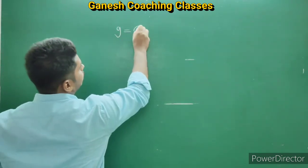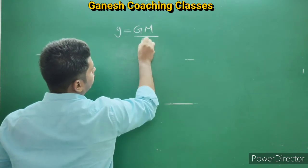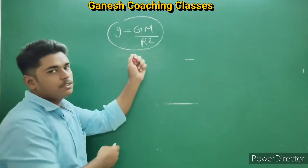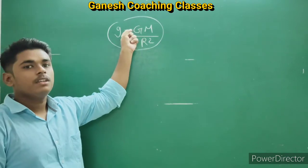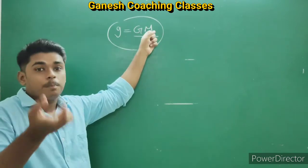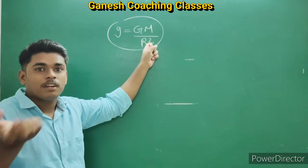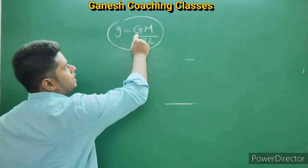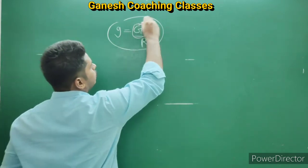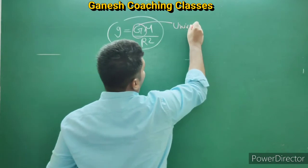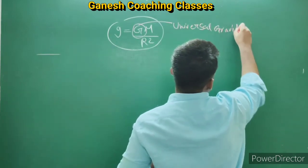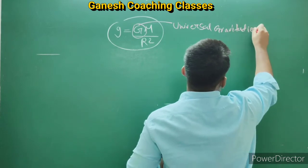The formula for g is: g = GM/R². In this formula, the value of g depends on the mass of the Earth and the radius of the Earth. Capital G is constant — this is known as the Universal Gravitational Constant.